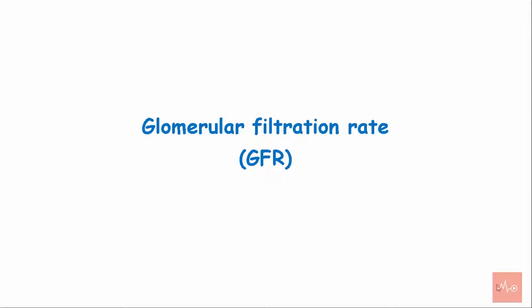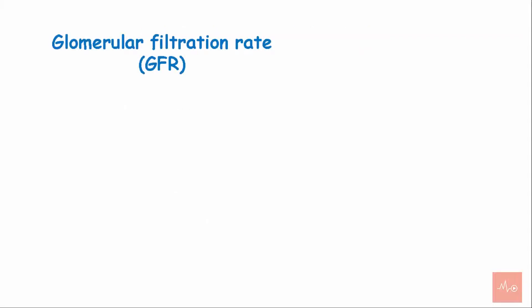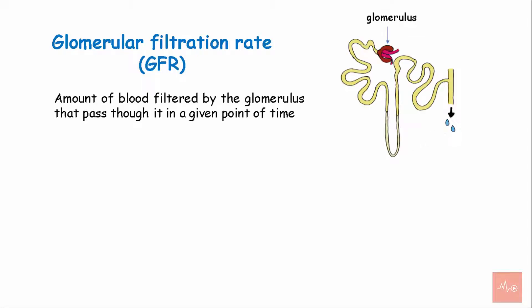Glomerular Filtration Rate, or GFR, is defined as the amount of blood filtered by the glomerulus that passes through it in a given point of time.